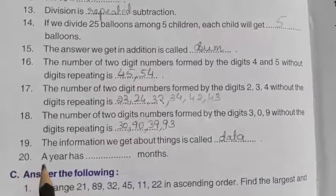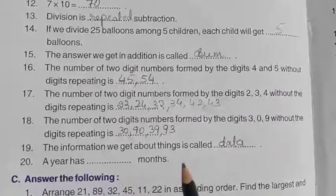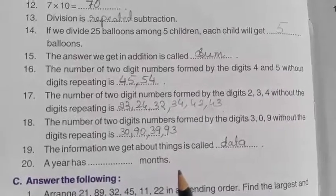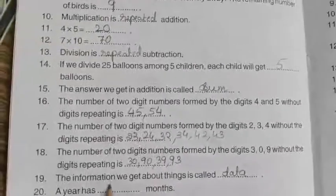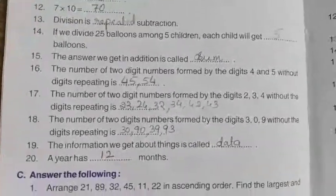So the last question is, a year has dash months. So very easy. Yes, a year has how many months children total? 12 months. Okay yes.